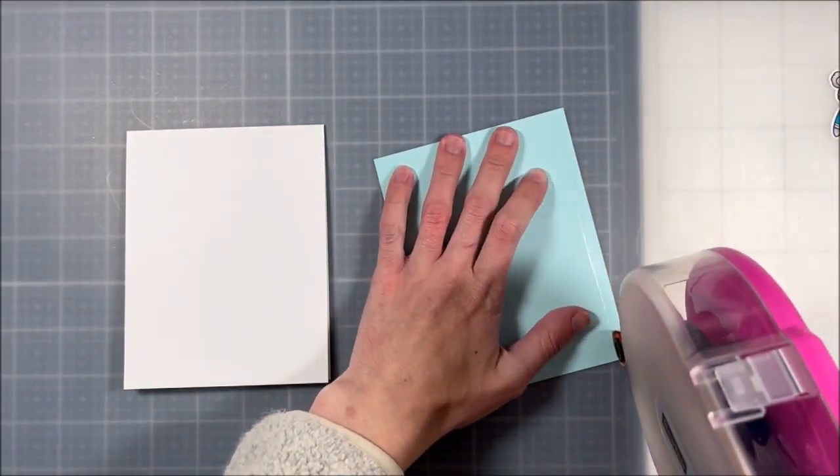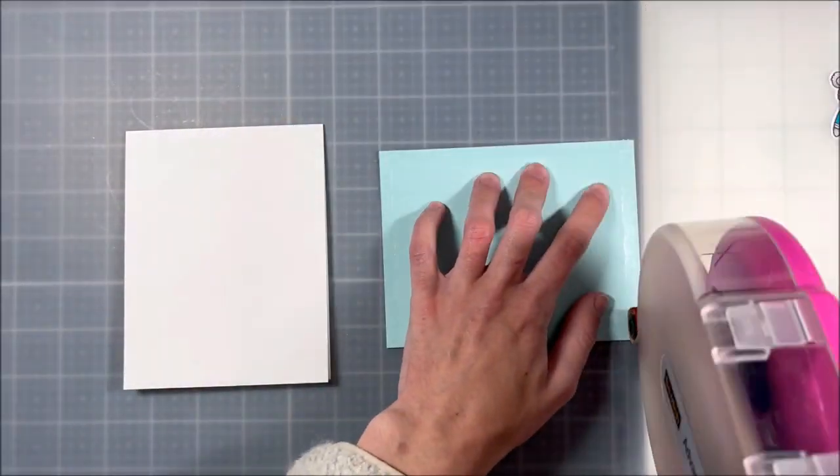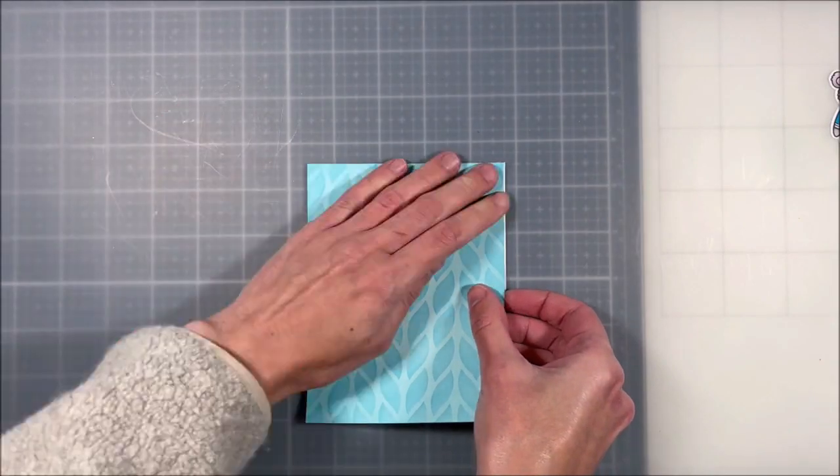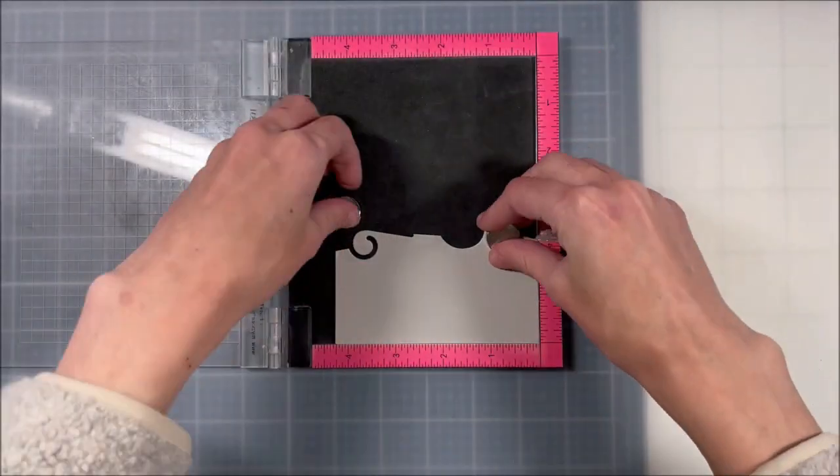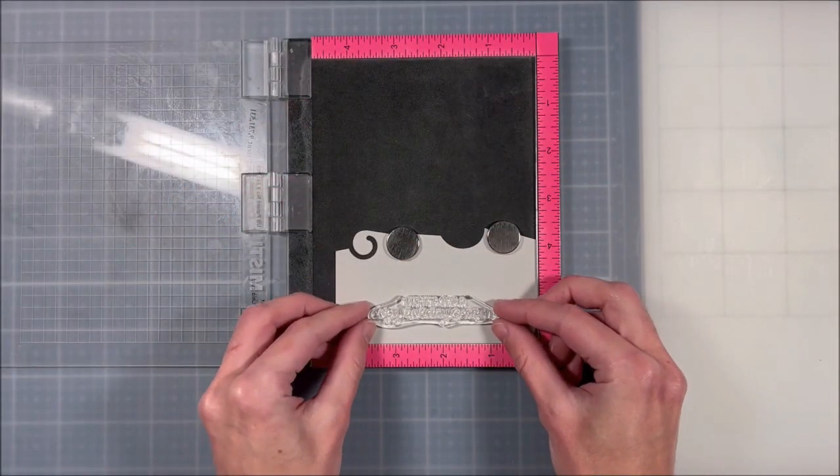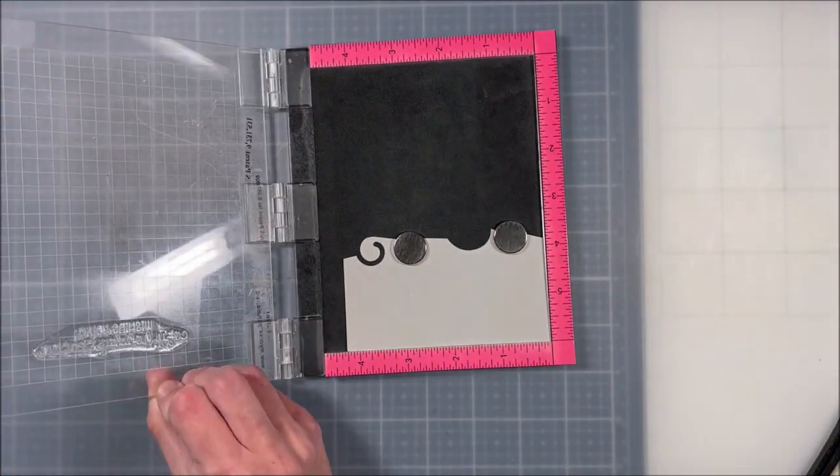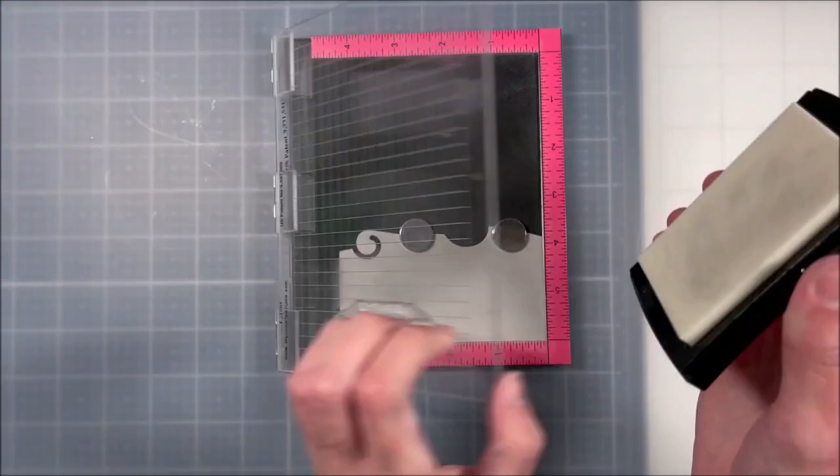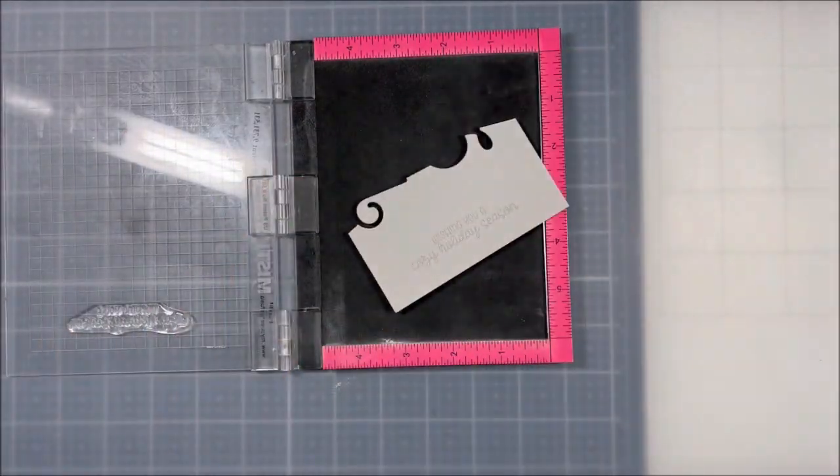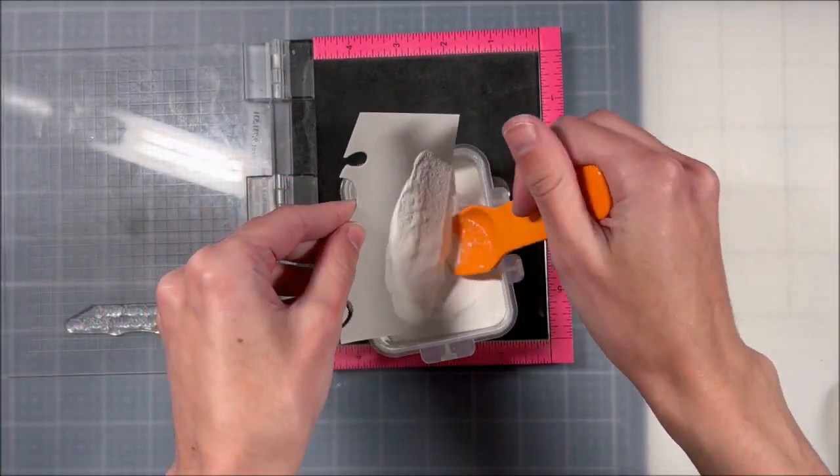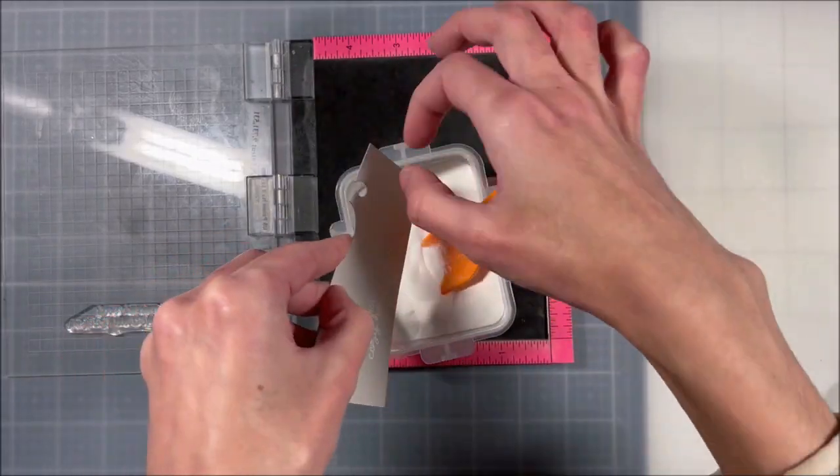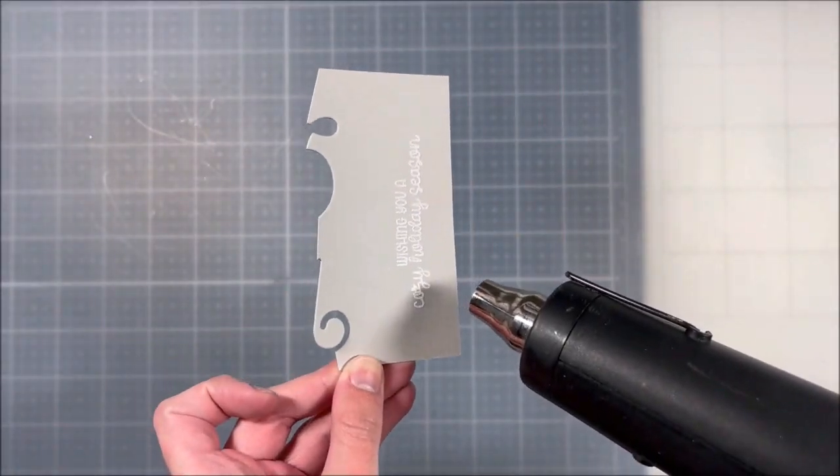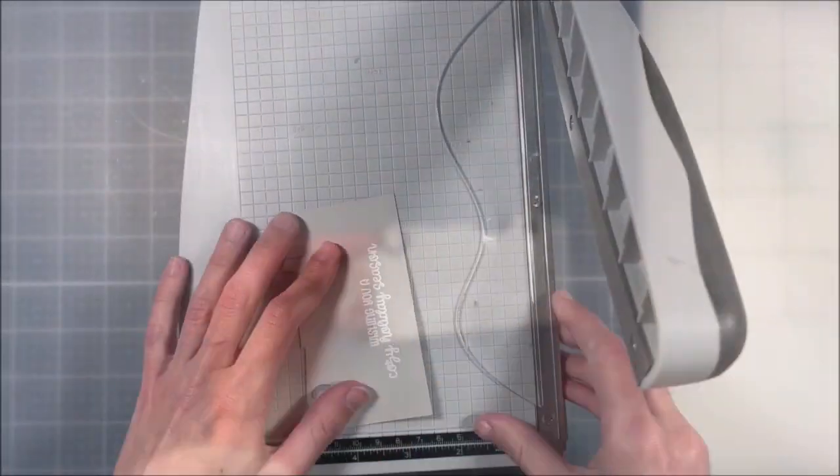Then I'm going to come in and do my card assembly, so I'm just taking some double-sided adhesive and sticking down my front panel to my card base. Then I'm going to come in with one of the sentiments from the same stamp set and I am going to white heat emboss that one onto some gray cardstock. I really like the look of white heat embossing on gray cardstock because it's a little softer than on black and the letters still stand out quite nicely.